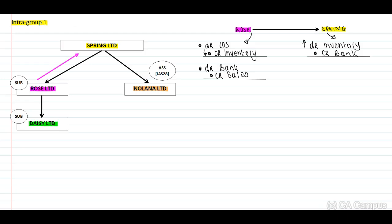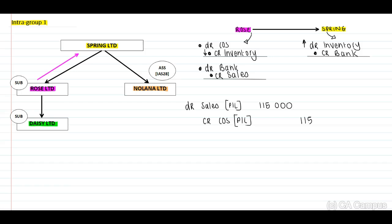When we need to eliminate the sales, the 115,000 sales in our group — our sales will have to decrease. Therefore we debit our sales with 115,000 and we need to credit our cost of sales 115,000. Remember no abbreviations.